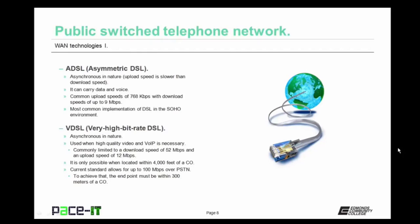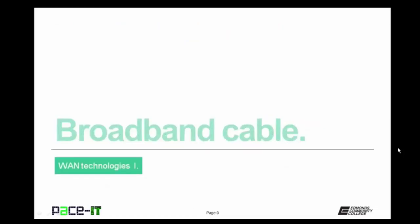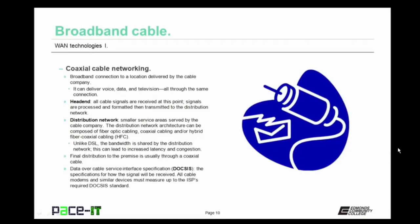There is an exception: current standards allow for up to 100 megabits per second over the PSTN using VDSL, but in order to achieve that you must be within 300 meters of the central office. Now that the PSTN is out of the way, let's move on to broadband cable. Broadband cable is coaxial cable networking — a broadband connection to a location delivered by the cable company. Broadband cable can deliver voice, data, and television all through the same connection. The digital signal is delivered to the head end, where all the cable signals are received, then processed and transmitted to the distribution network.